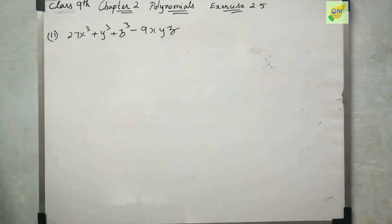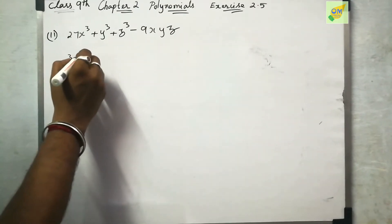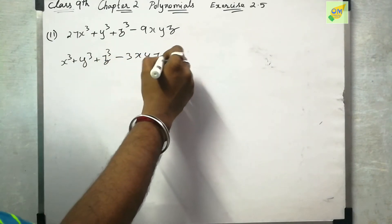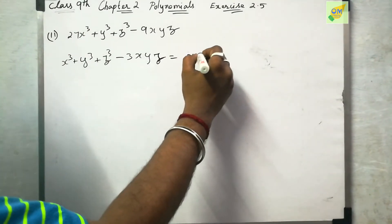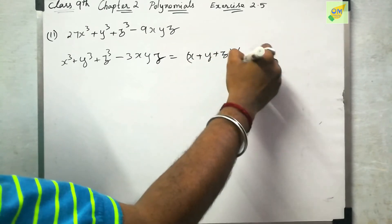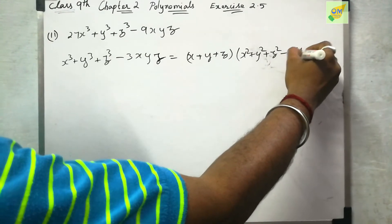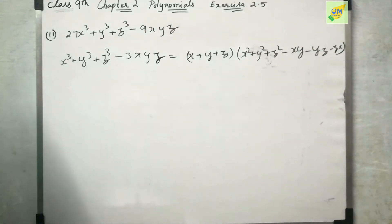So now we will talk about factorizing 27x³ plus y³ plus z³ minus 9xyz. The identity is: x³ plus y³ plus z³ minus 3xyz equals x plus y plus z, then x squared plus y squared plus z squared minus xy minus yz minus zx. So this is the identity.